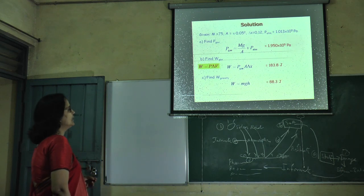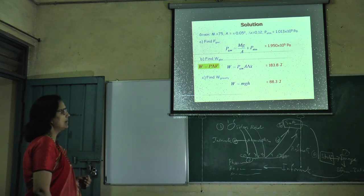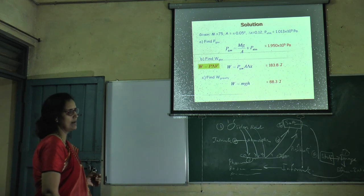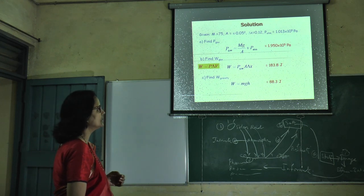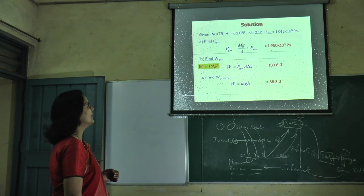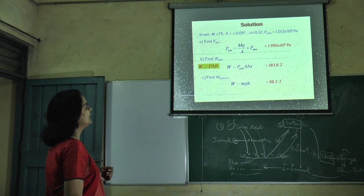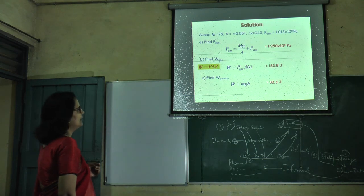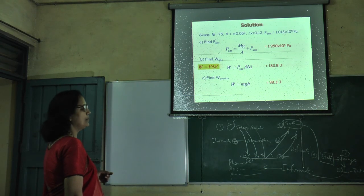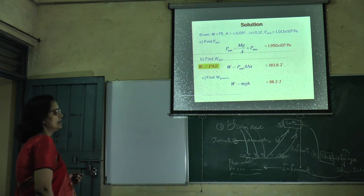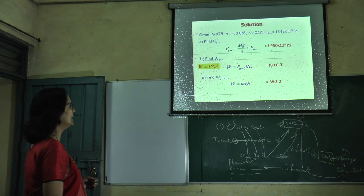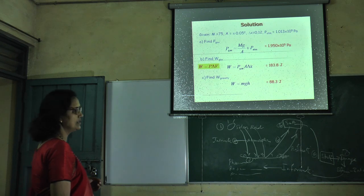To find out the gravitational work done, it is calculated by Mg into H. M is mass, G is gravitational force, and H is height. Three types of work is calculated: Number one, gas state. Number two, find the work done in gas state when displacement is done, pressure into A into delta X. Delta X is displacement. And third one is gravitational work done, calculated by Mg into H.